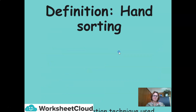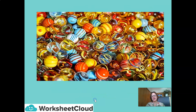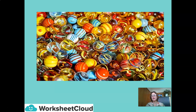Hand-sorting is a separation technique used to remove unwanted impurities from a mixture by hand. It involves simply picking out substances by hand and separating them from others. Hand-sorting can be used when items differ on the basis of colour, shape, and weight. A good example: you could use hand-sorting to separate marbles by colour — the blue ones from the yellow ones.